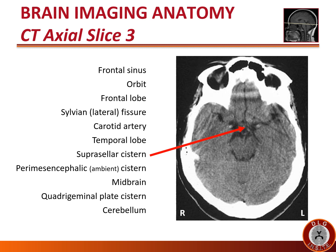The supracellar cistern — the large central cerebrospinal fluid space above the sella — has six points. The point most anteriorly is the interhemispheric fissure. The upper corners go to the sylvian fissures. The bottom corners go to the perimesencephalic cisterns. And the most posterior point centrally is the interpeduncular cistern.